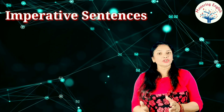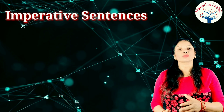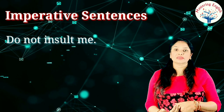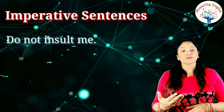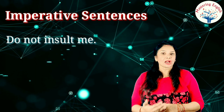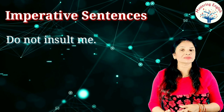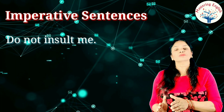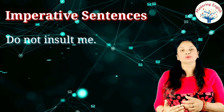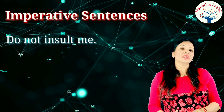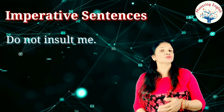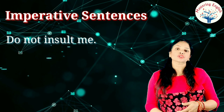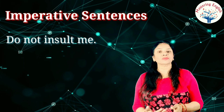In an imperative sentence, the action verb is in the first form and 'you' is the understood subject, but we do not write it. When changing to passive, we start with 'let', then change the object to subject, then use 'be' followed by the third form of the verb. It is up to you whether to include 'by' and the subject-turned-object.